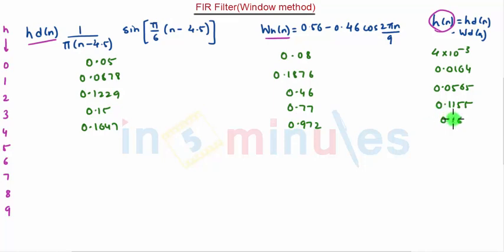Now, we will find out the other values and multiply them. We can also use here the symmetry property because it is valid here also. So, we can write these 5 values in reverse order. That would be 0.1647, 0.15, 0.1229, 0.0878, and 0.05.